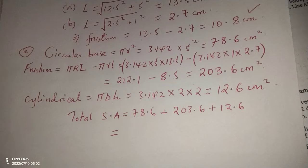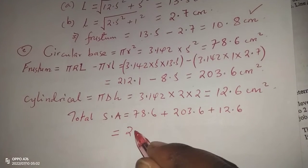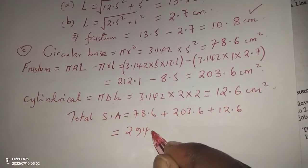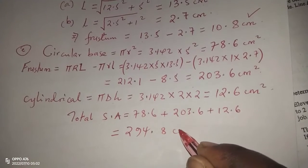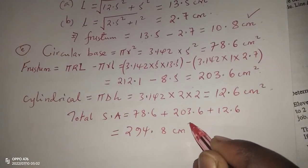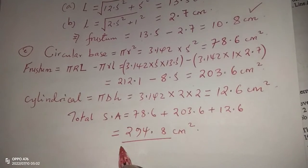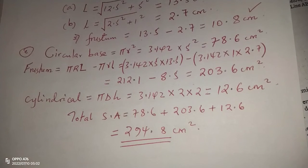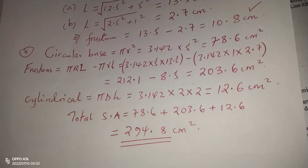The total external surface area is 78.6 + 203.6 + 12.6 = 294.8 square centimeters. That is the total surface area of the flask. Thank you for following — please subscribe and share.